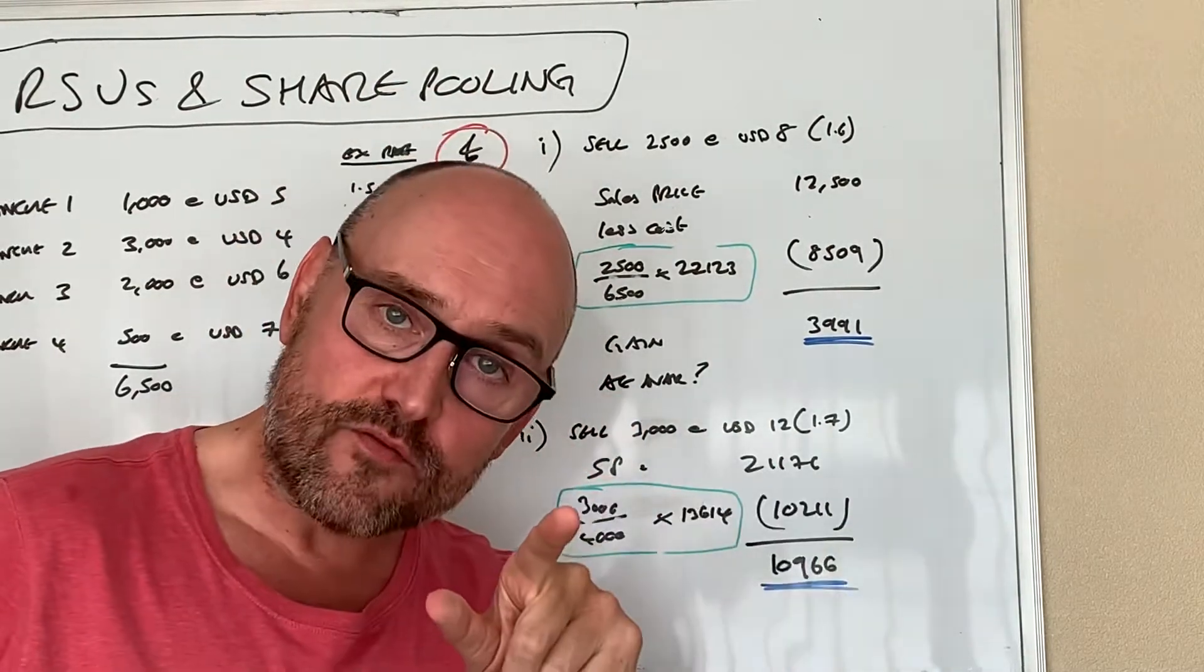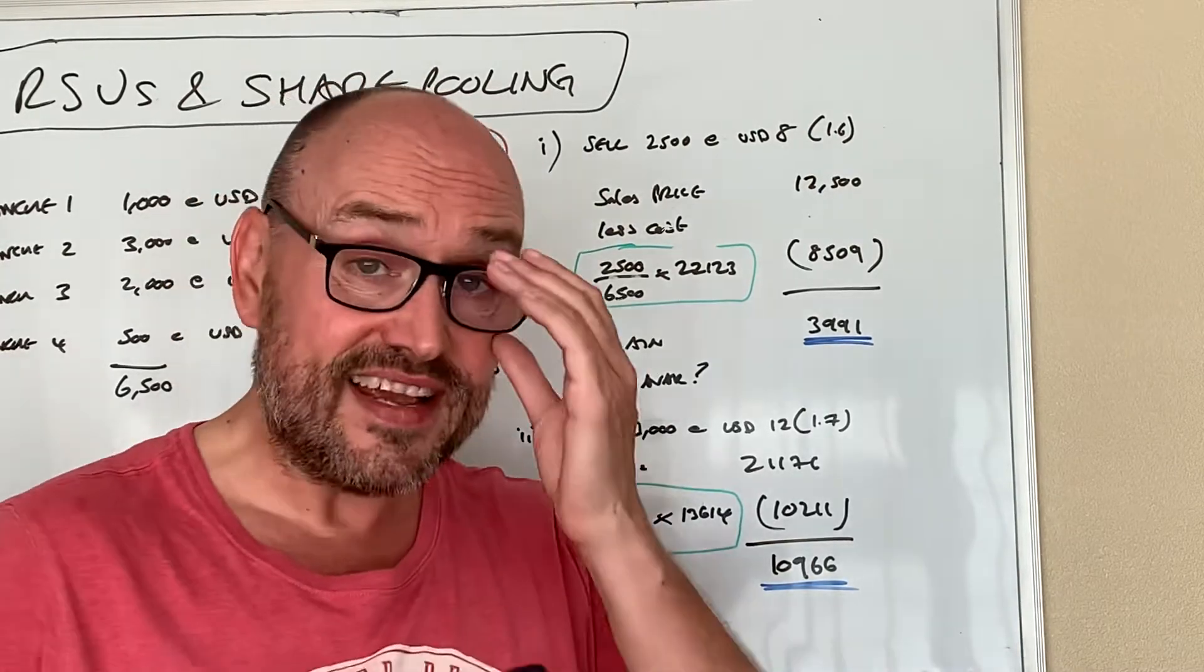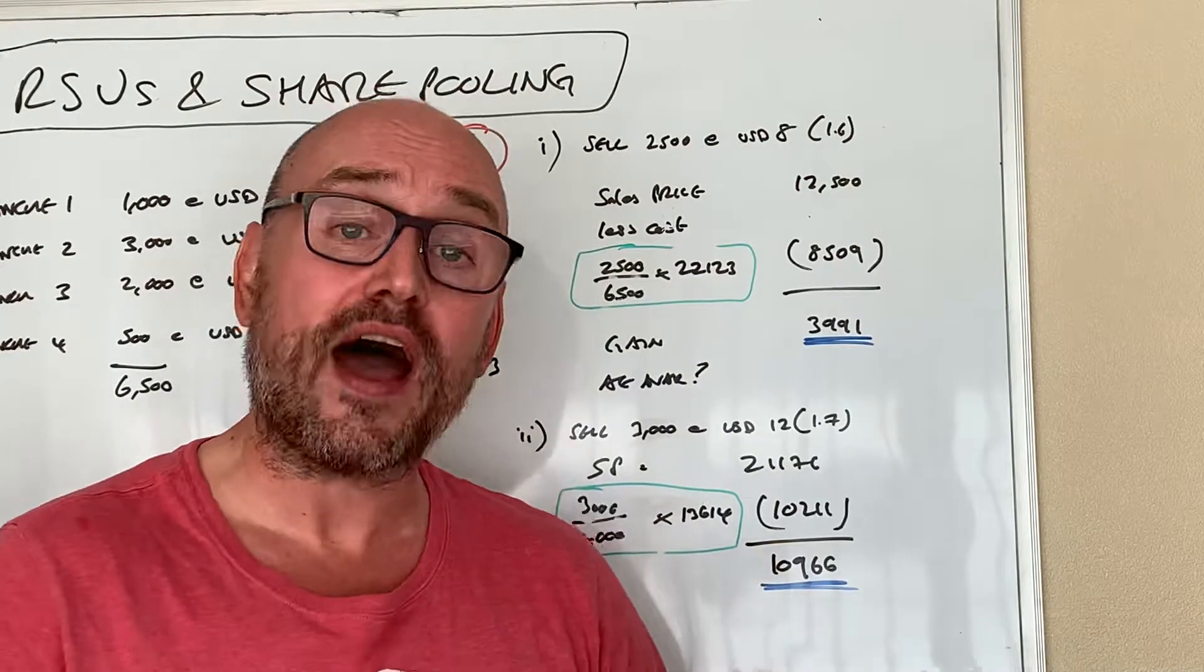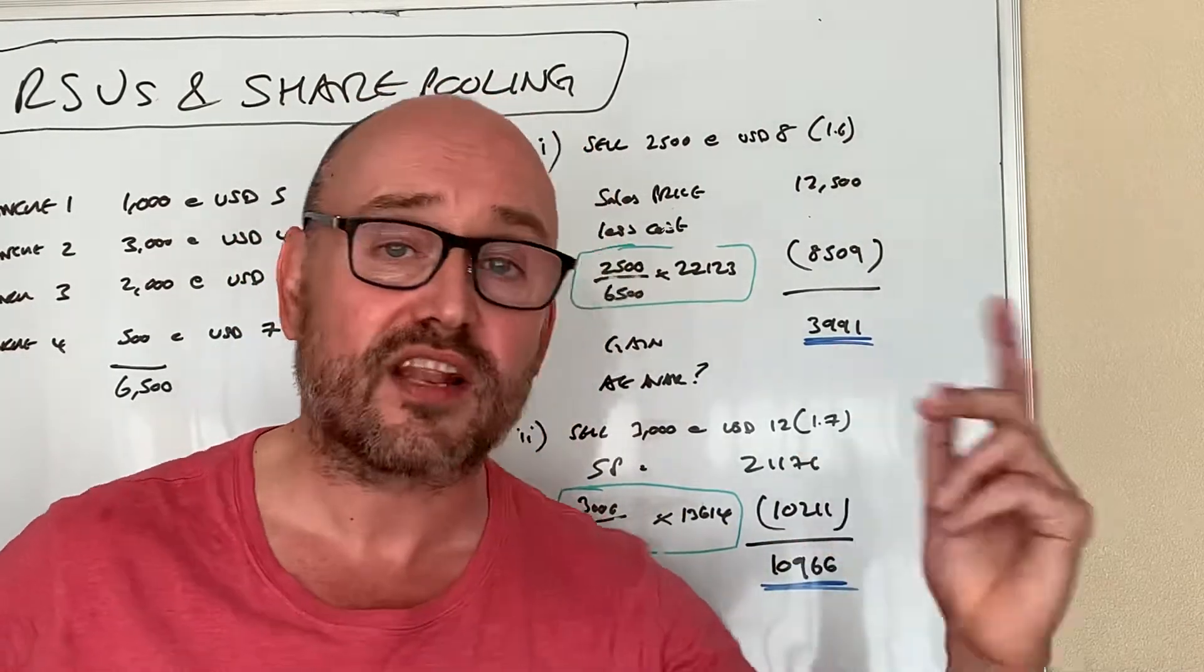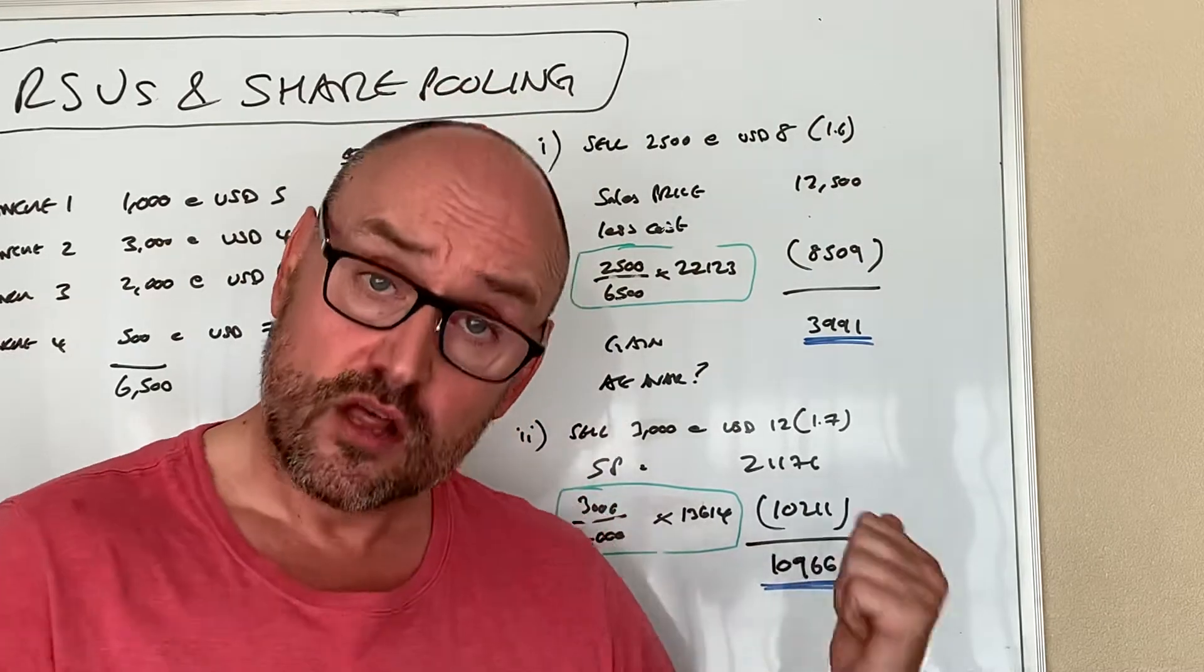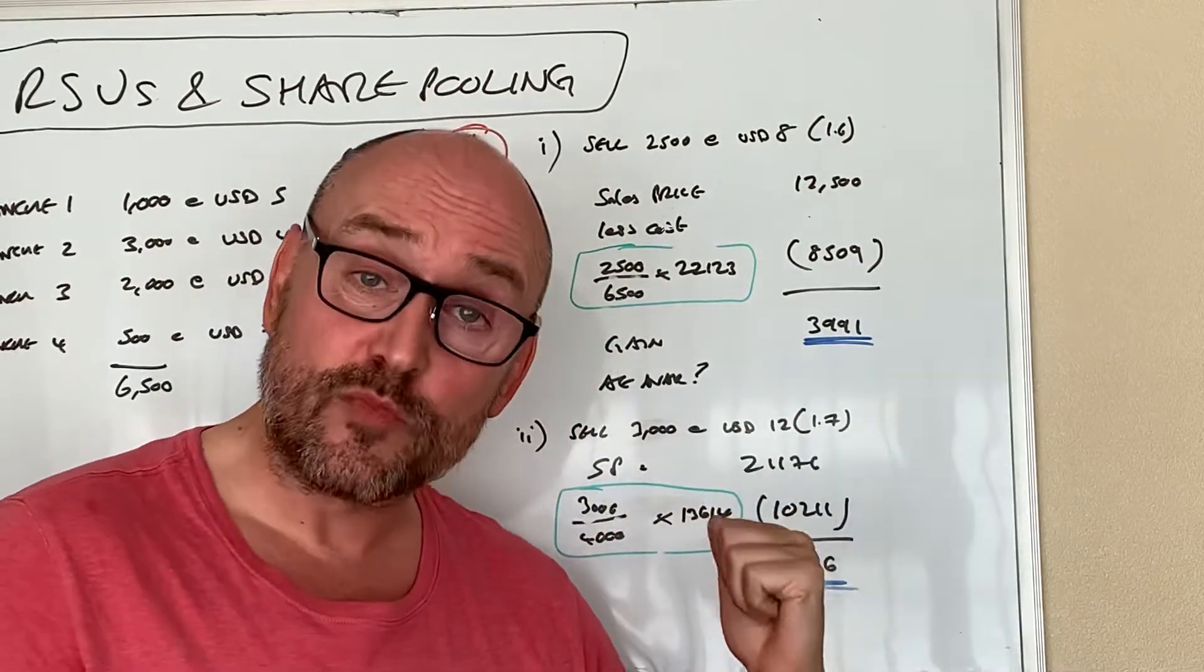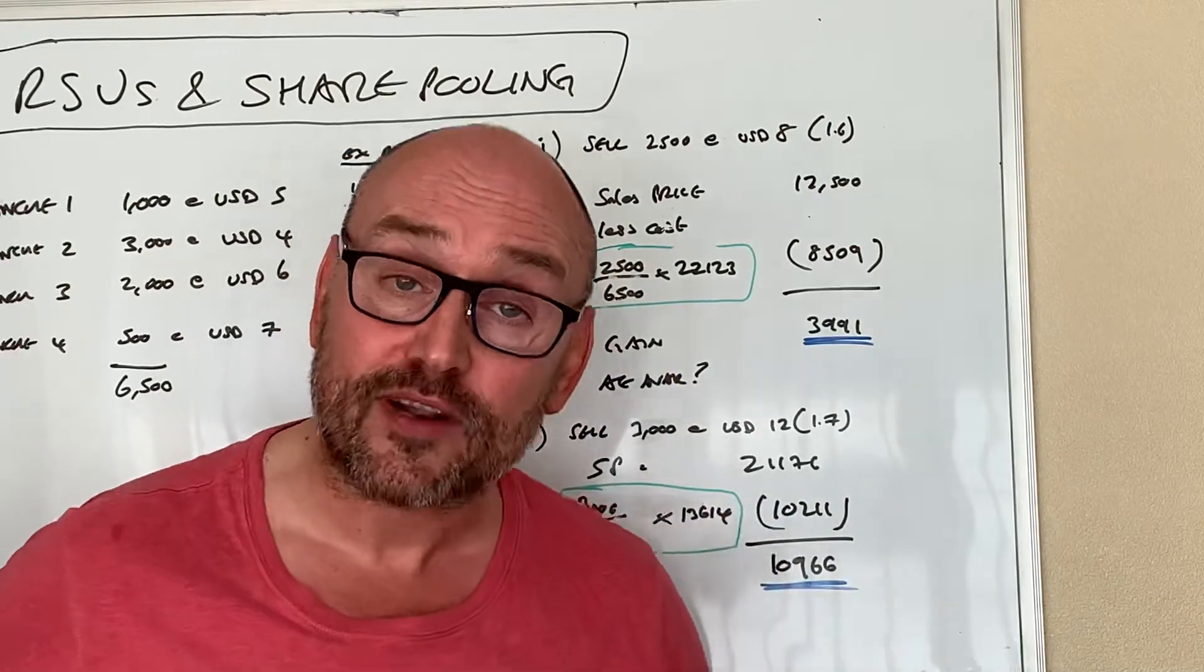Again, subject to what else he's got going on to determine the actual capital gains tax, but the gain is eleven thousand. So that's how share pooling works on RSUs and indeed any other stocks and shares that you've got held outside tax efficient wrappers like ISAs and SIPs.